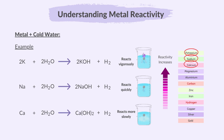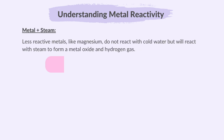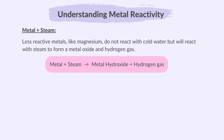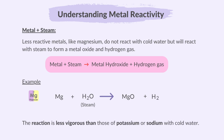Less reactive metals, like magnesium, do not react with cold water, but will react with steam to form a metal oxide and hydrogen gas. Magnesium reacts with steam to produce magnesium oxide and hydrogen gas. The reaction is less vigorous than those of potassium or sodium with cold water. Magnesium is less reactive than potassium, sodium and calcium, so it reacts with steam, which provides more energy, rather than with cold water.